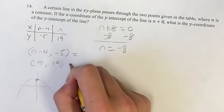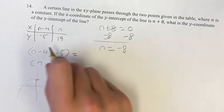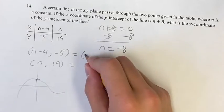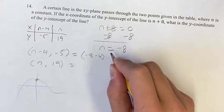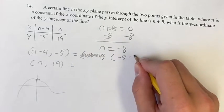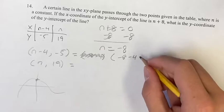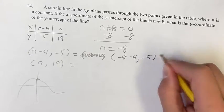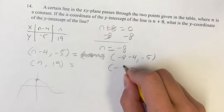So now we know what these points are because we can plug -8 in. So we have -8-4... We have -8-4, putting in -8 where we see n, -8-4, -5. And then we have (-8, 19).